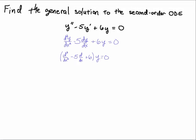Viewing this whole expression as an operator is quite fruitful. You can look at this as: take the second derivative minus 5 times the first derivative plus 6, very much like a function where y is the input. Remember that the derivative operator is a linear operator — that means you can differentiate term by term and factor out constants.